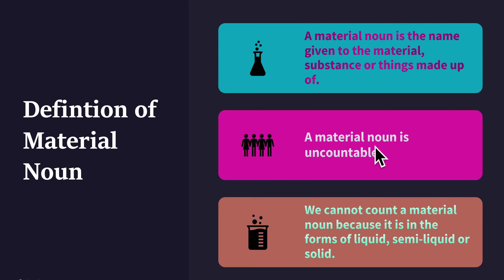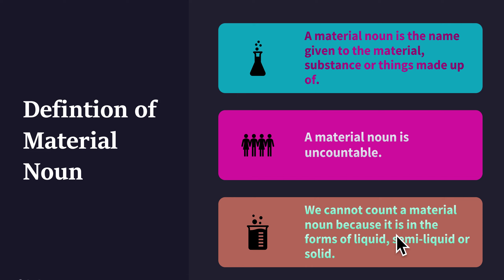A material noun is uncountable. We cannot count material noun because it is in the forms of liquid, semi-liquid, or solid.